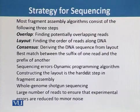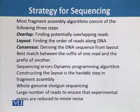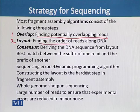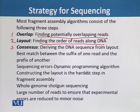Most fragment assembly algorithms consist of the following three steps: first is the overlap step, in which we find the potentially overlapping reads; second is the layout, in which we find the order of the reads along the DNA; and third is the consensus — deriving the DNA sequence from the layout.